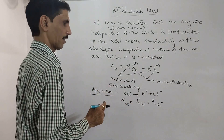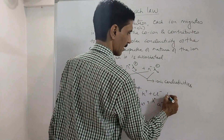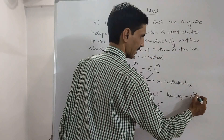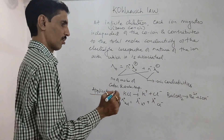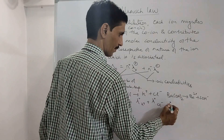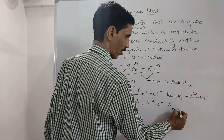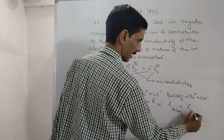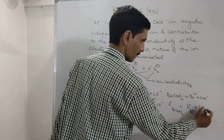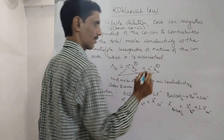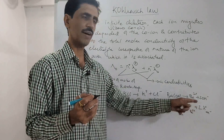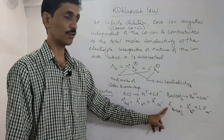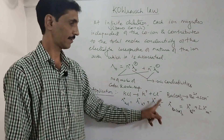Now consider barium hydroxide, Ba(OH)₂, which dissociates as Ba²⁺ and 2OH⁻. So the molar conductivity of barium hydroxide is given as: λ°(Ba(OH)₂) = λ°(Ba²⁺) + 2 × λ°(OH⁻), because there is one cation and two anions. Knowing these ionic conductivity values, we can find the molar conductivity of the electrolyte.